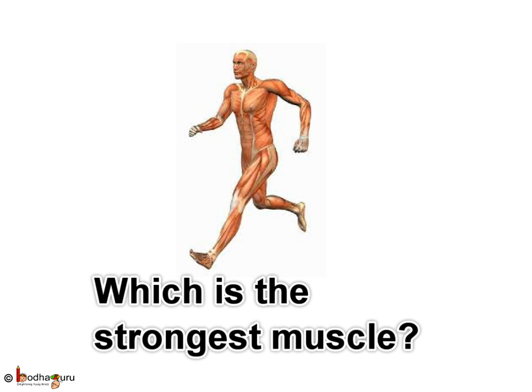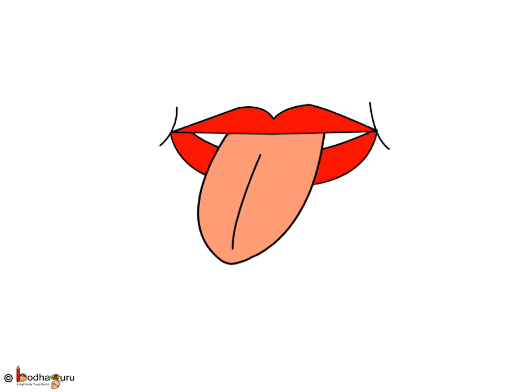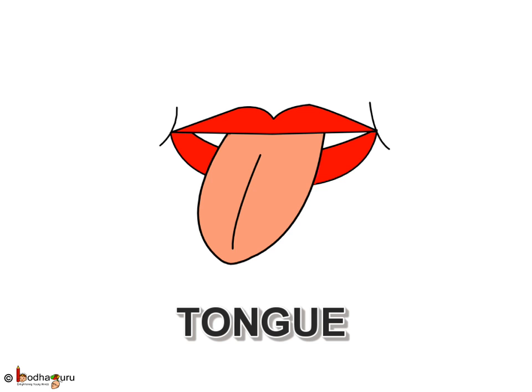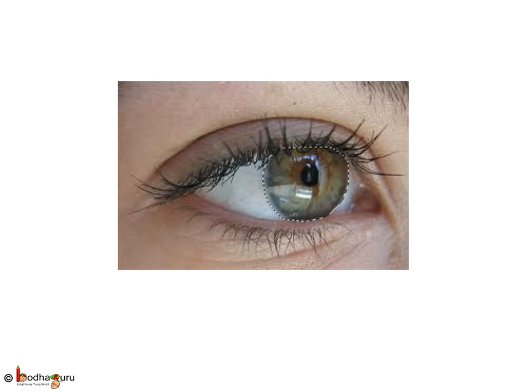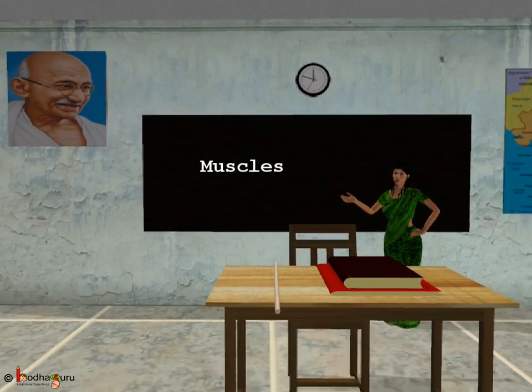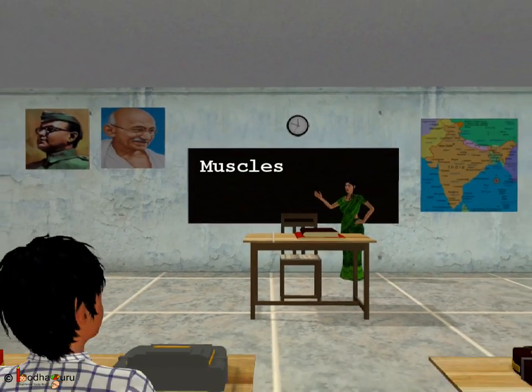Which is the strongest muscle? The strongest muscle in the body is the tongue — surprising, isn't it? Which is the busiest muscle? Eye muscles are the busiest muscles in the body. By some estimates, they may move more than 100,000 times a day. That's a lot of times.